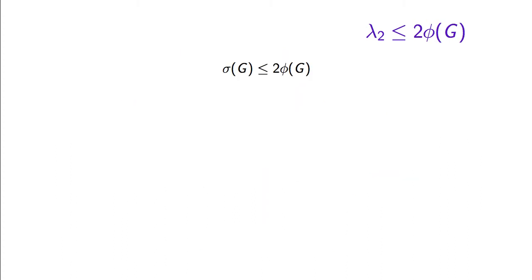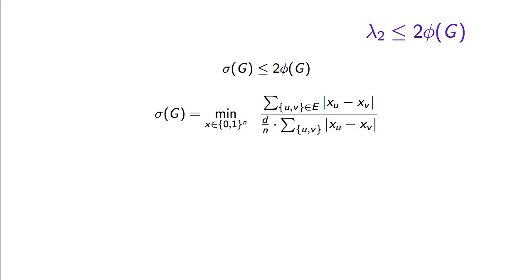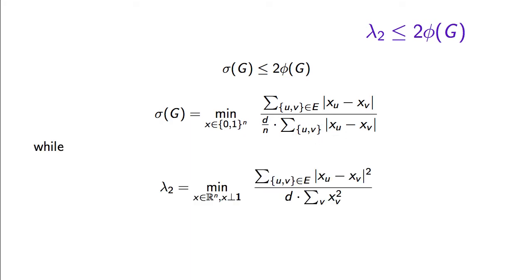We have established that the sparsity of a graph is at most twice the expansion, and that the sparsity is the minimum over all sets of vertices — which we may equivalently represent as Boolean vectors — of the number of edges with one endpoint in a set and one endpoint in the other, divided by the total number of pairs of vertices that are separated by the cut. Notice the similarity between this and the characterization of the second smallest eigenvalue of a regular graph from the variational characterization of eigenvalues: the minimum over all real vectors orthogonal to the all-one vector of the Rayleigh quotient x^T L x divided by x^T x, which can also be rewritten in terms of edge differences.